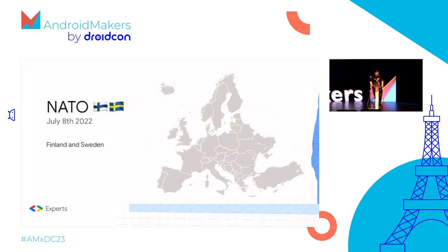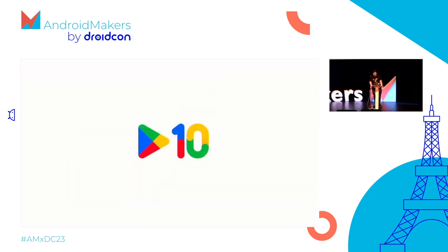But it's not all bad. In July, NATO signed the accession protocols for Finland and Sweden — awesome news. Also in July, Google celebrated ten years of the Google Play Store. It's quite interesting that it's been around so long and seems sort of ubiquitous — it's always been there, as the place where we download our apps.